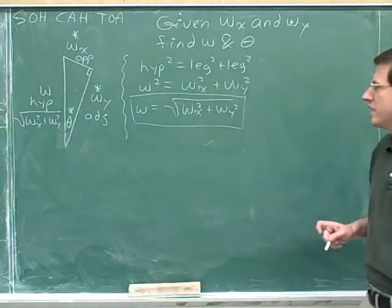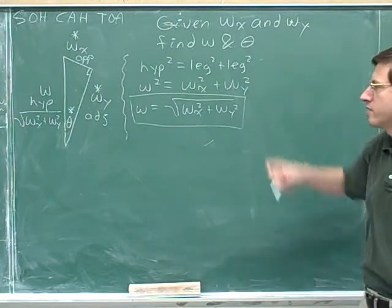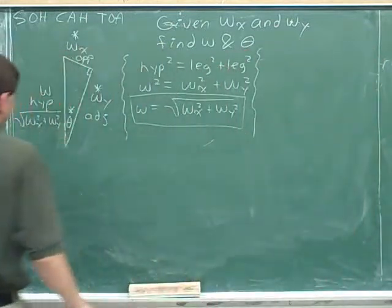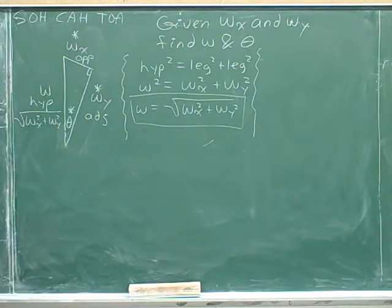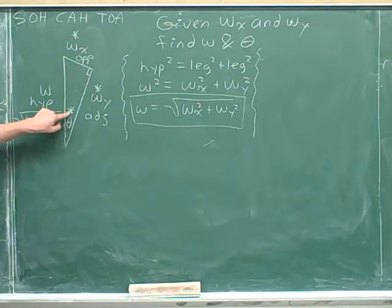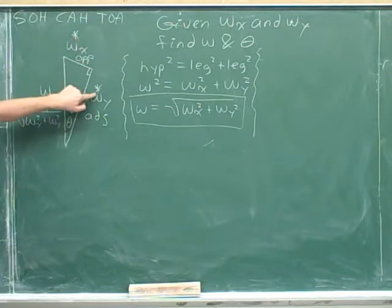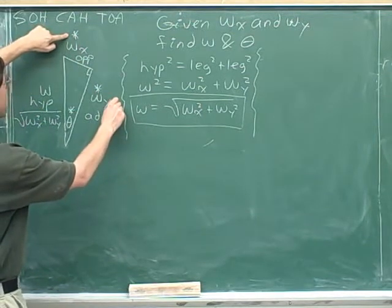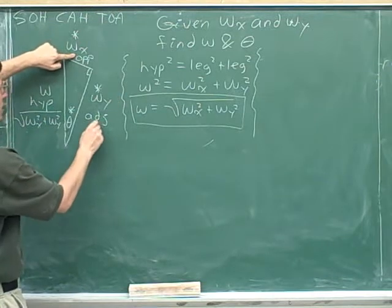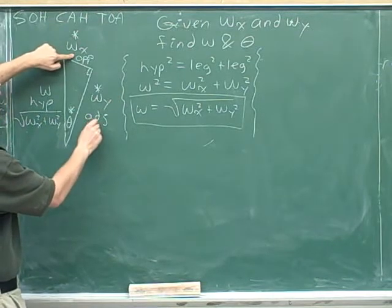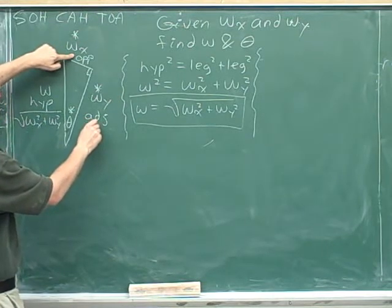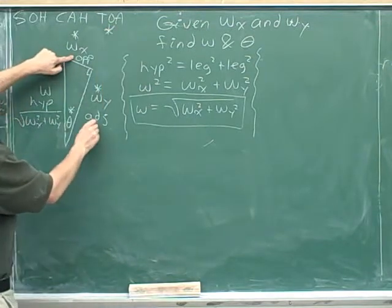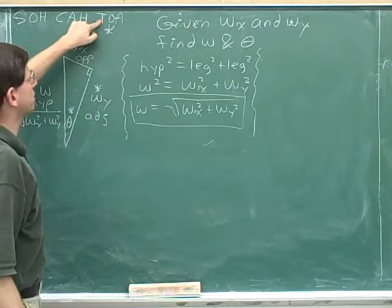We're only 50% done because the problem was also asking us for theta. Let's form a plan for how we're going to find theta. Well, we know that we're going to try to find theta using the information that we were given, which we've marked with the asterisks. So what did we mark with asterisks? What were we given? We were given the opposite side and the adjacent side. Given the opposite and the adjacent. So which trig function should we use? We should use the trig function that involves the opposite and the adjacent sides. That's toa, the tangent.